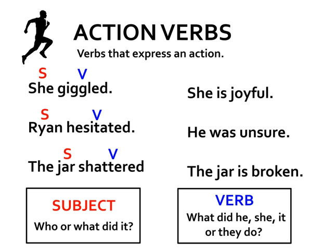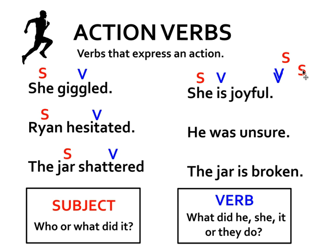What's the difference when I look at these three verbs? Rather than saying 'she giggled,' what if I said 'she is joyful'? 'She' is my subject, but what is she doing? My verb is 'is.' Or 'He was unsure' — he is my subject, but my verb is 'was.' And 'The jar is broken' — the jar is my subject, and it's not breaking, it just is broken. So 'is' is my verb.